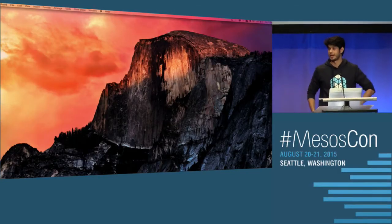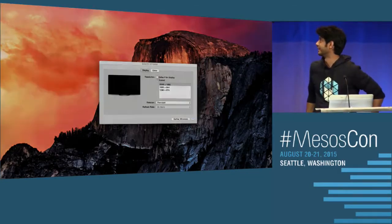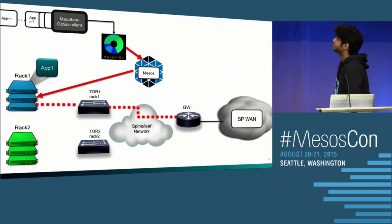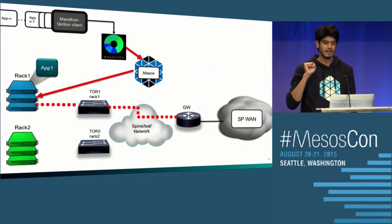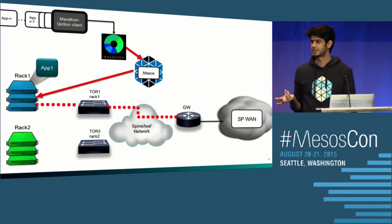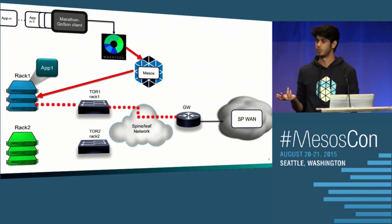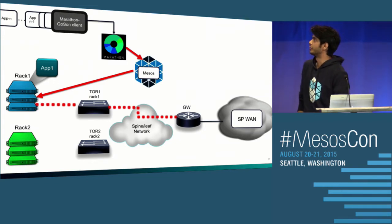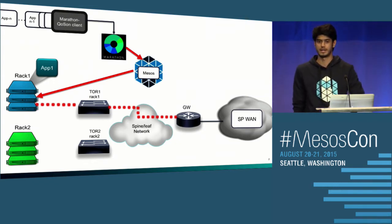I've got only five minutes, but I actually wanted to show a bunch of things, so let me try and speed through it. To start off, I was trying a few things with some of the network devices that we've been working on recently at Cisco. To give you a quick background, I'm a technical marketing engineer at Cisco.